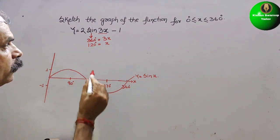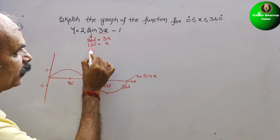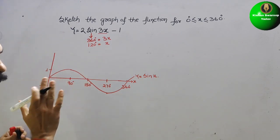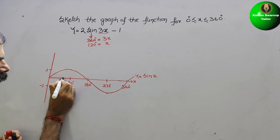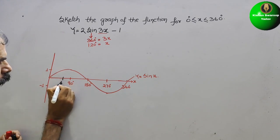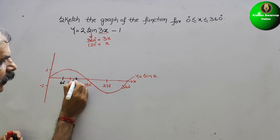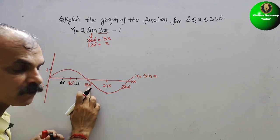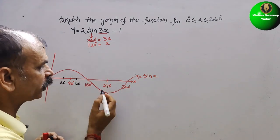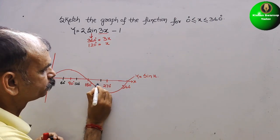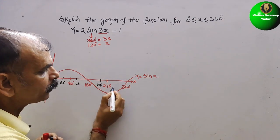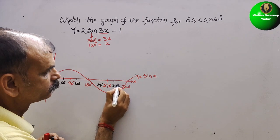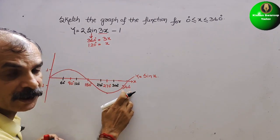Now we need to complete each cycle in 120° instead of 360°. So the x-axis is divided into intervals of 60°: 60°, 120°, 180°, 240°, 300°, and 360°.